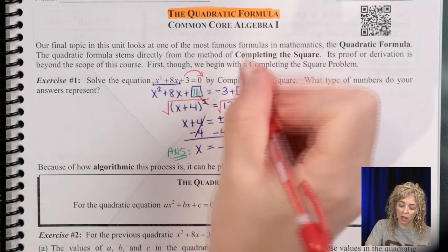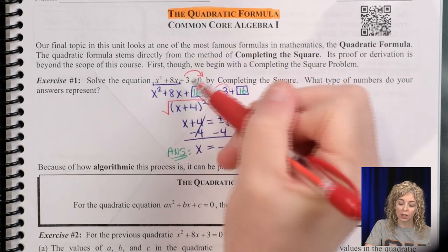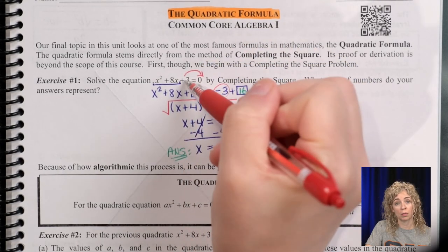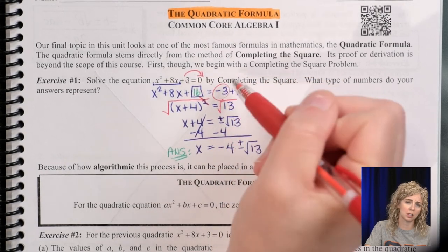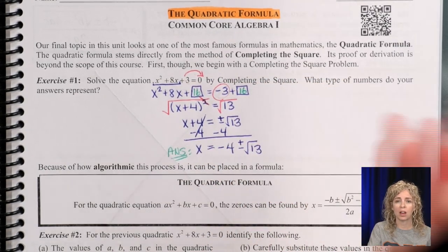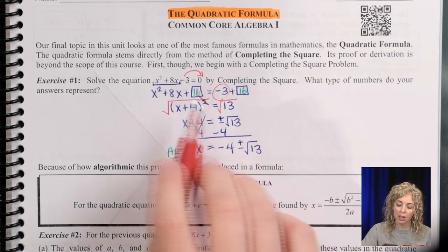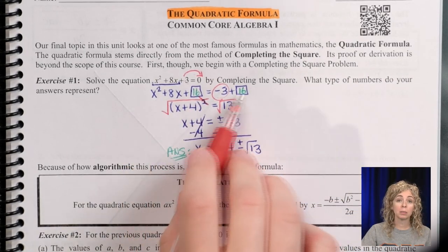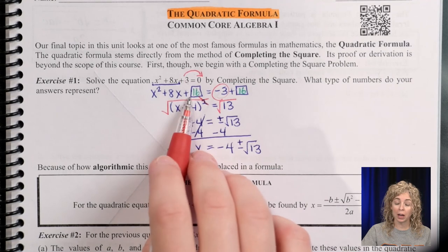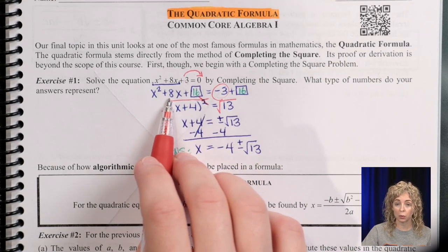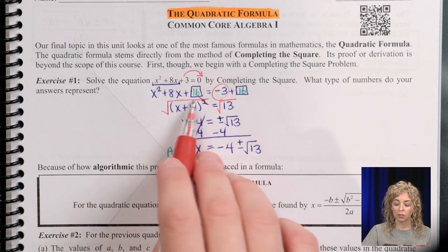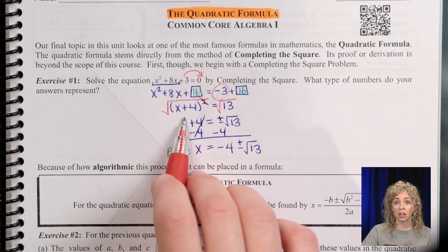So the first thing we wanted to do was move the 3 to the other side of the equation, and that's why on this side it's negative, where on the left side it's positive, because you move it from the left side of the equal sign to the right side, or just move it from one side to the other. It's going to have the opposite sign. Then we're left with the box method, and to fill the box, remember it's half of this number squared, so half of 8 is 4, and then 4 squared is 16.